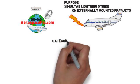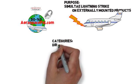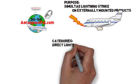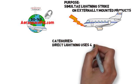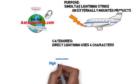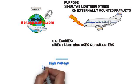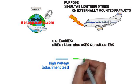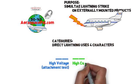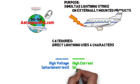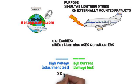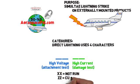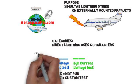The category consists of four characters. The first two characters refer to the high voltage strike attachment test and the last two refer to the high current physical damage test. XX denotes that the test was not run, while ZZ denotes that there is a custom test or test level run.